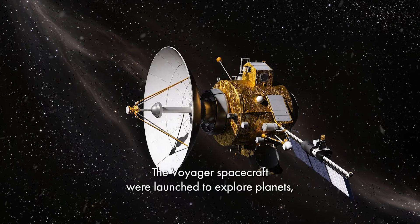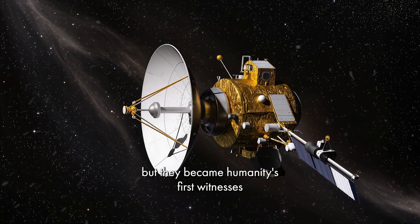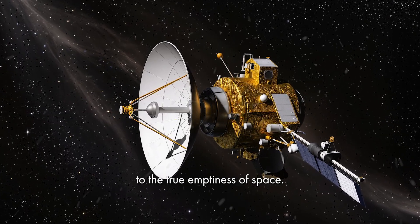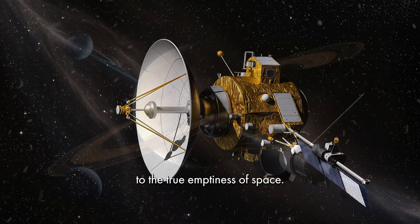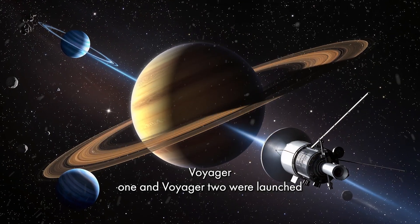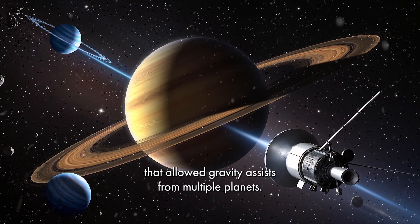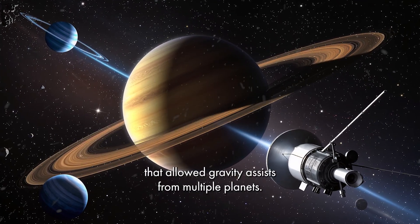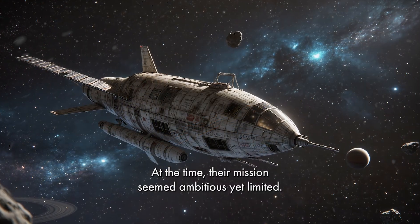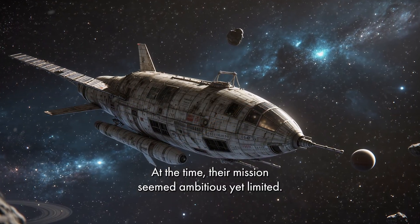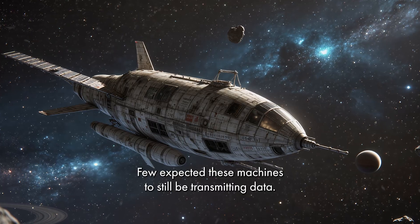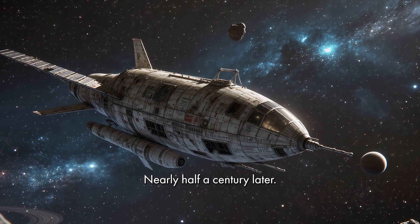The Voyager spacecraft were launched to explore planets, but they became humanity's first witnesses to the true emptiness of space. Voyager 1 and Voyager 2 were launched in 1977 using a rare planetary alignment that allowed gravity assists from multiple planets. At the time, their mission seemed ambitious yet limited. Few expected these machines to still be transmitting data nearly half a century later.